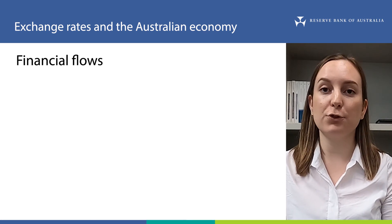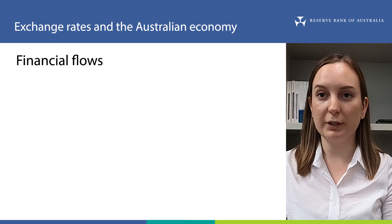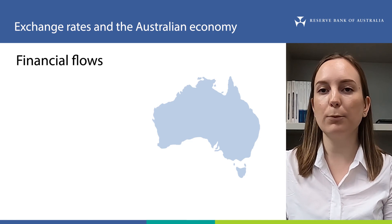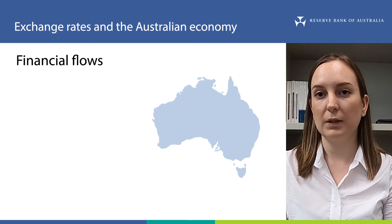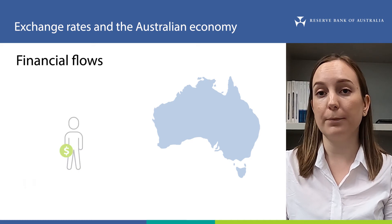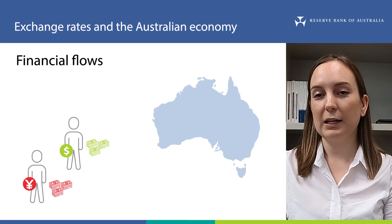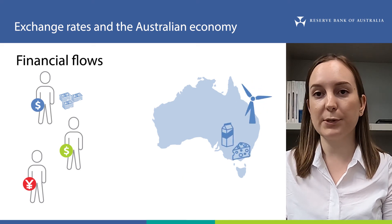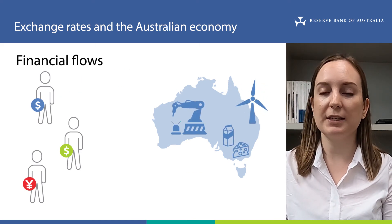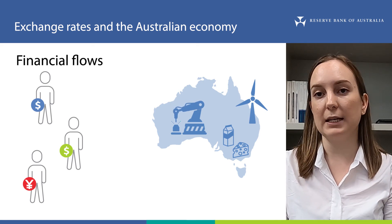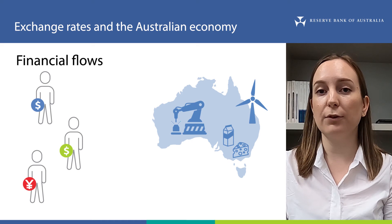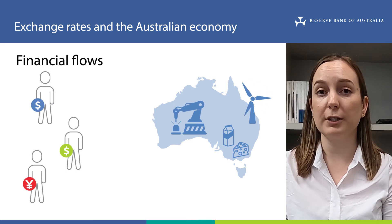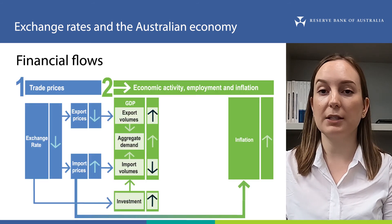Finally, let's discuss financial flows, also called capital flows, which measure the investment of money in and out of Australia. A depreciation in the Australian dollar makes it cheaper for foreigners to invest money in Australia, and also makes it more expensive for Australians to invest money overseas. As a result, both foreigners and Australians may choose to invest more in Australia instead of overseas. Some of this investment will increase Australia's capacity to produce goods and services — for example, the construction of a wind farm or a new factory — which increases aggregate demand and GDP.